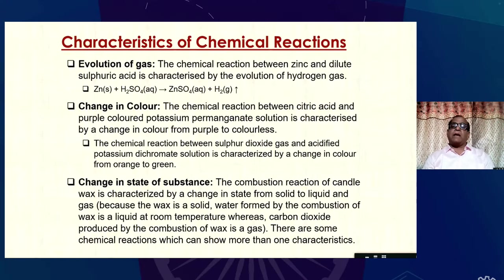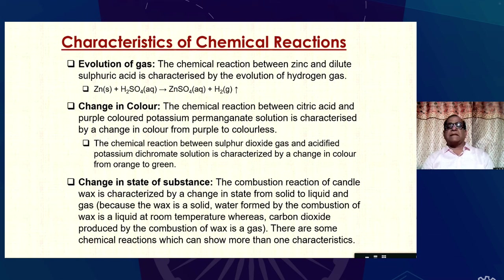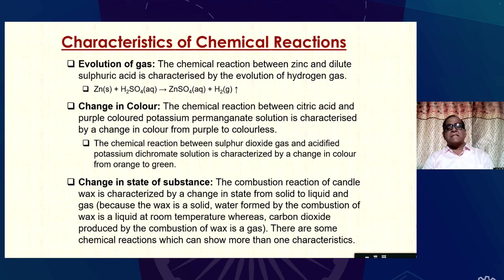Now, the characteristics of chemical reactions. The first characteristic is evolution of gas. The chemical reaction between zinc and dilute sulfuric acid is characterized by the evolution of hydrogen gas — zinc reacts with sulfuric acid to form zinc sulfate, and hydrogen gas is evolved. The second characteristic is change in color. The chemical reaction between citric acid and purple-colored potassium permanganate solution is characterized by a change in color from purple to colorless.